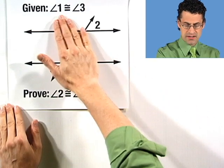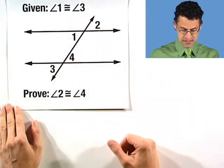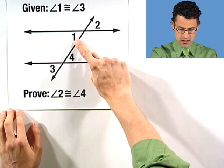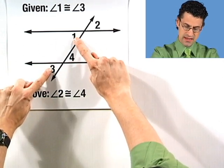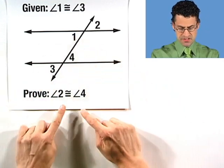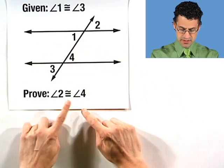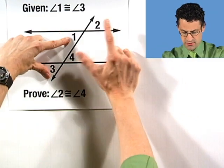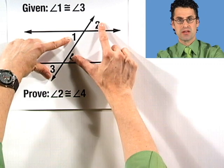We're given that angle one is congruent to angle three. So let's take a look at this picture right here. I see that angle one is congruent to angle three. So that's what we're given. And now I'm supposed to prove that angle two is congruent to angle four. Well, I know these two are congruent. I want to show these two are congruent. And you know what? I think this is going to be okay.